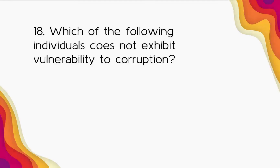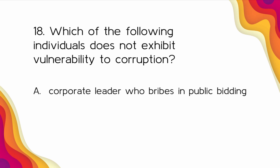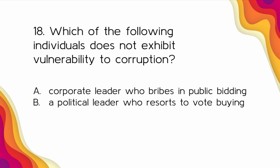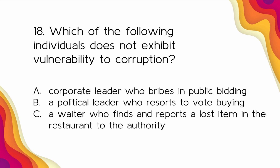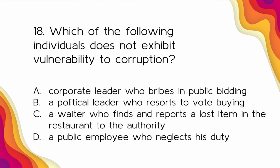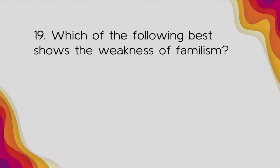Number eighteen: Which of the following individuals does NOT exhibit vulnerability to corruption? A) Corporate leader who bribes in public bidding, B) Political leader who resorts to vote buying, C) A waiter who finds and reports a lost item in the restaurant to the authority, D) A public employee who neglects his duty. The answer is Letter C — the waiter who finds and reports a lost item, showing integrity and honesty.